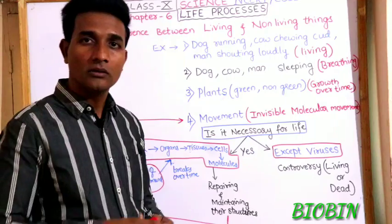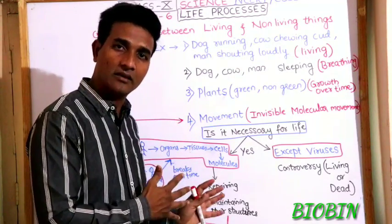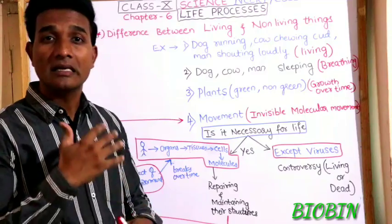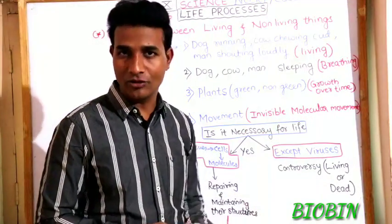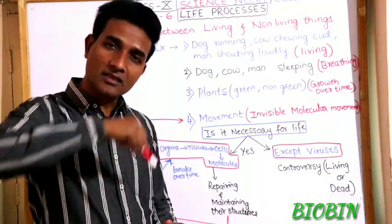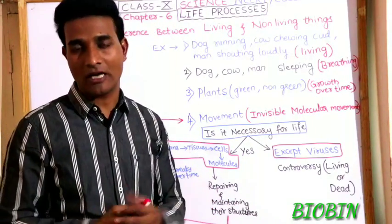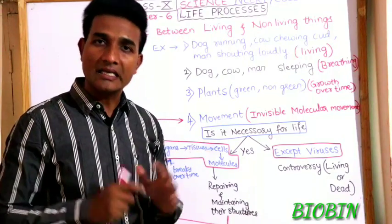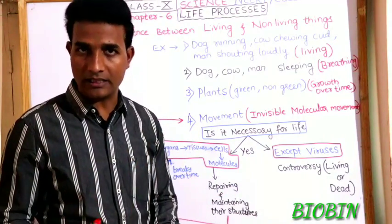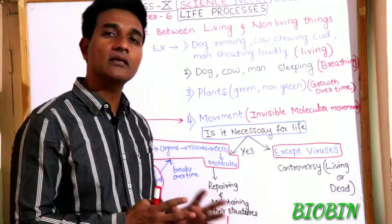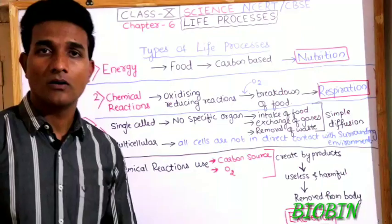Due to the external environment, there is a breakage of this order, and this breaking over time will cause the organism to die. To maintain, repair, and sustain itself, the living organism requires continuous movement of molecules. This movement of molecules helps in the repairing and maintenance of living organisms.